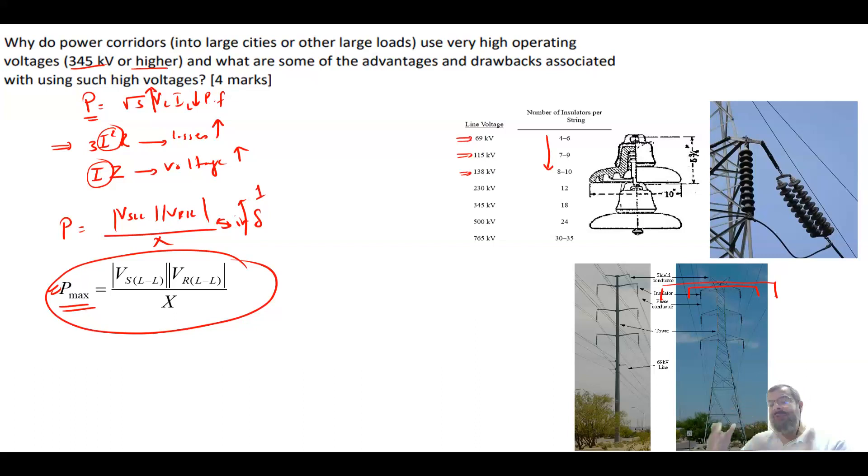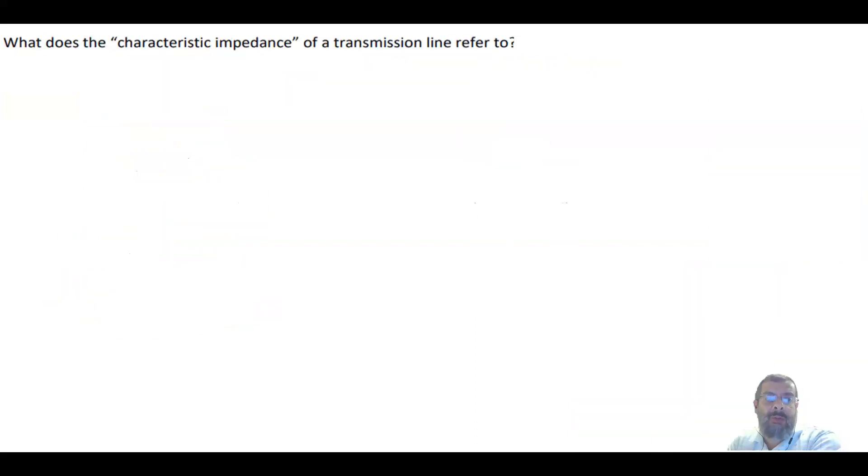The second question is what does characteristic impedance of transmission line refer to? We use the word characteristic impedance when we use lossless lines, when we ignore R. For certain studies we ignore R, we ignore the power loss in the lines and we are more concentrating on the reactive power.